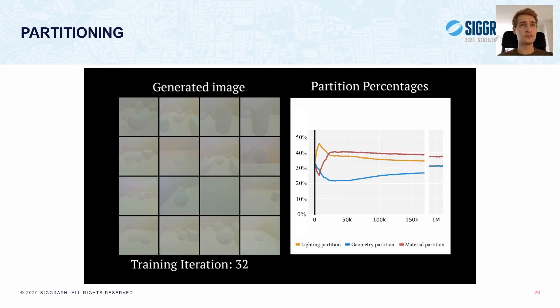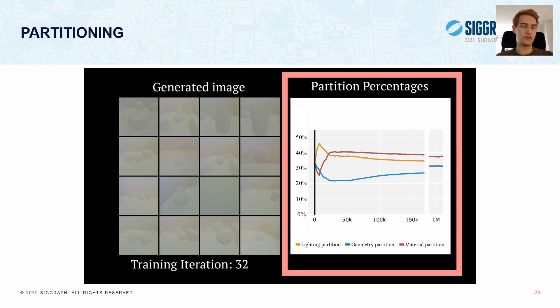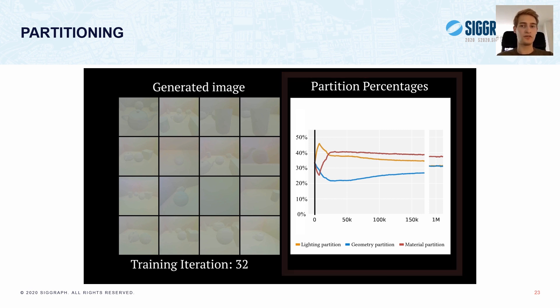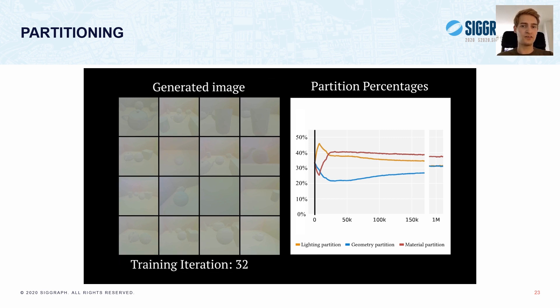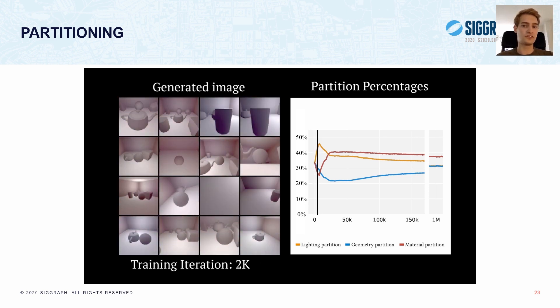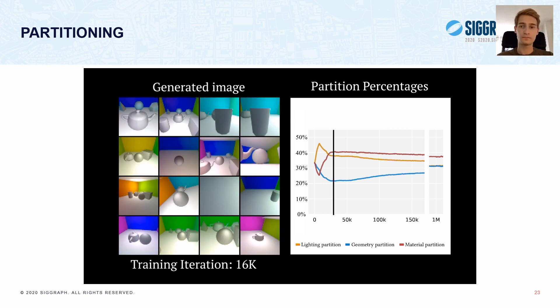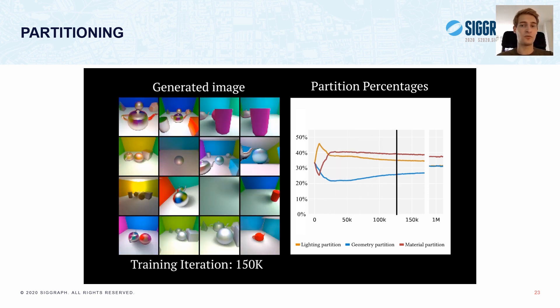So, using this approach, we can also study how different networks prioritize different types of information, based on their loss function. So, on the right, we plot how the partition sizes change during training. The yellow curve here represents the size of the lighting partition, the blue curve for geometry, and then we have the red curve for materials. Then, for additional visual support, we show some generated outputs on the left. So, due to its high impact on our loss function, the model initially prioritizes lighting information, and thus the lighting partition grows. Once the lighting is roughly matched, the model focuses on extracting and utilizing material information. And lastly, we see a steady increase in the geometry partition, as this information is vital for correctly synthesizing shadows.